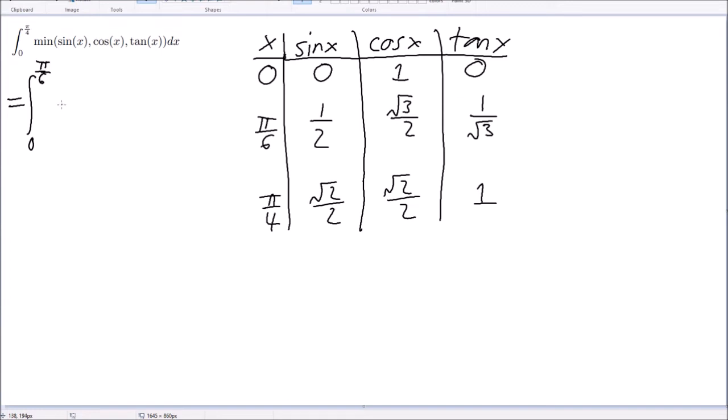So, from 0 to pi over 6, from 0 to pi over 6, we get that... I'm sorry, cosine of x is the, oh, no, I'm stupid, that's maximum. Oh, what the fuck, the minimum?